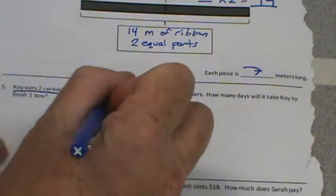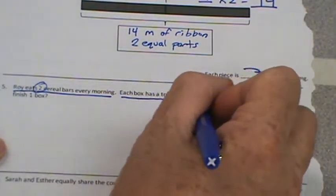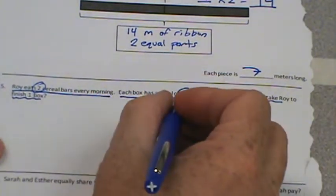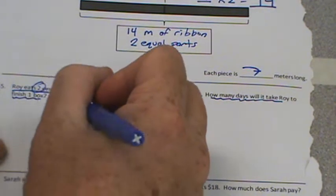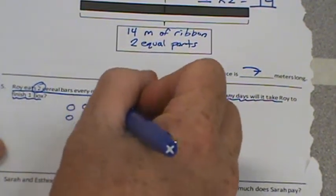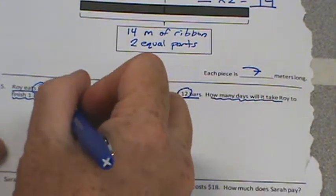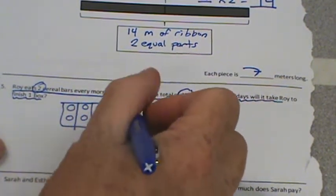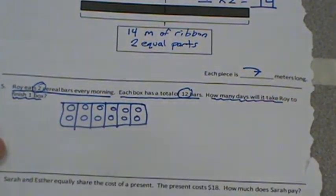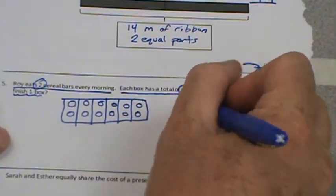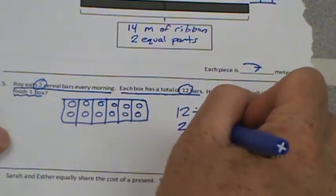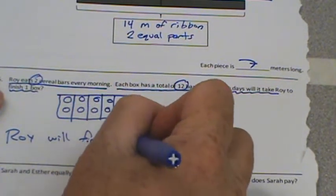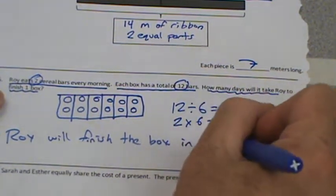Roy eats two cereal bars every morning. I'm going to circle the two. Each box has a total of twelve bars — he needs two a day. How many days will it take Roy to finish one box? Twelve bars in one box: one, two, three, four, five, six, seven, eight, nine, ten, eleven, twelve. Each section stands for a day: day one, two, three, four, five, six. It will take him six days, because twelve divided by six equals two, and two times six equals twelve. Roy will finish the box in six days.